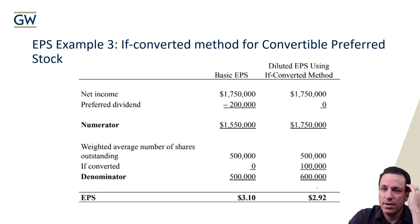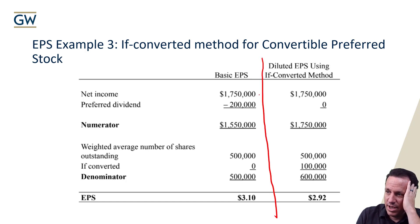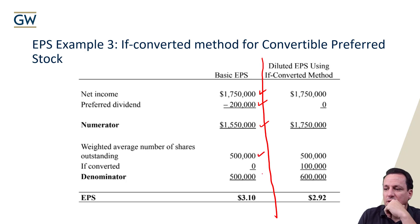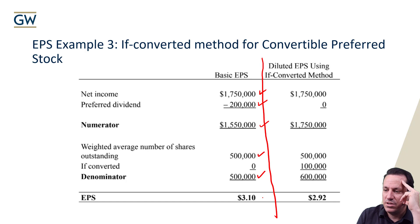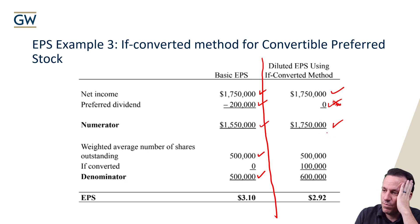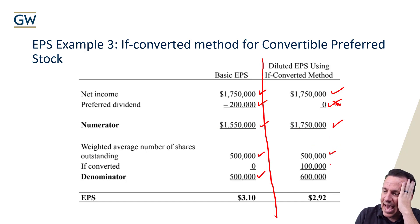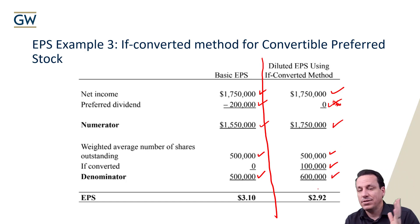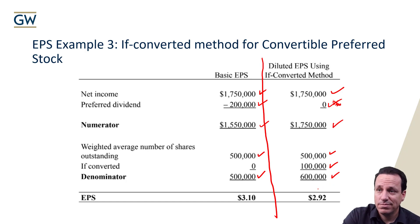To summarize: for basic EPS, the numerator is net income less preferred dividends ($1.75M minus $200K = $1.55M), and the denominator is 500,000 shares, giving $3.10. For diluted EPS using the if-converted method, we assume no preferred dividends — so the numerator is the full $1.75 million. We add the 100,000 converted shares to get a denominator of 600,000, then divide to get $2.92. That is the if-converted method for convertible preferred stock.